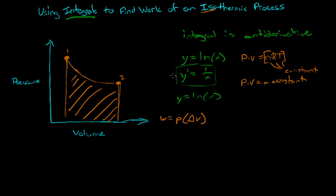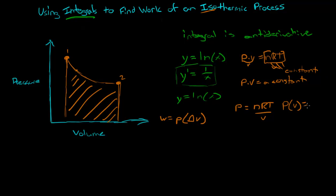So if we want to find the work, we need to know what the function of pressure in terms of volume is. Taking PV equals nRT and dividing both sides by V, we get P equals nRT divided by volume. That is the same as writing P of V equals nRT over V.